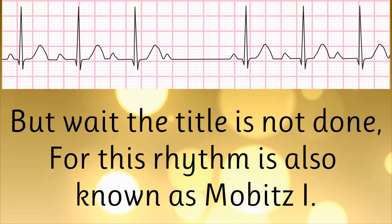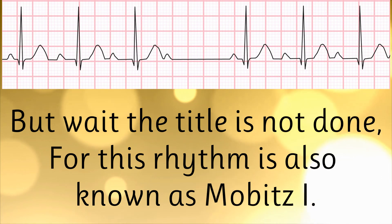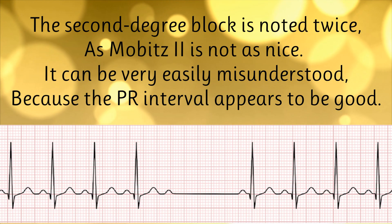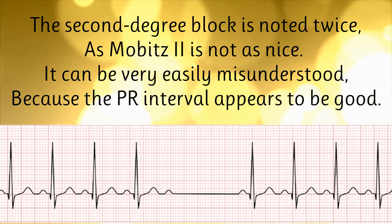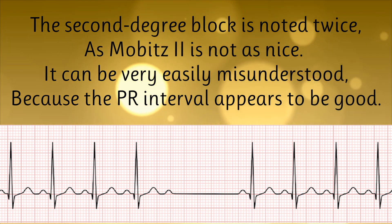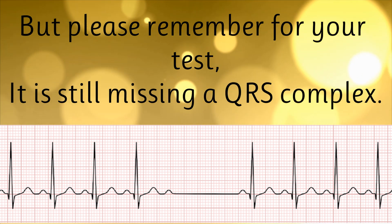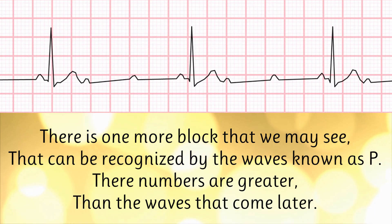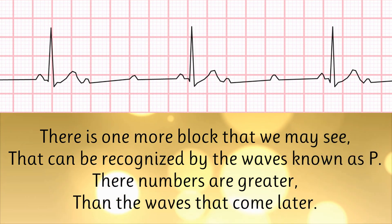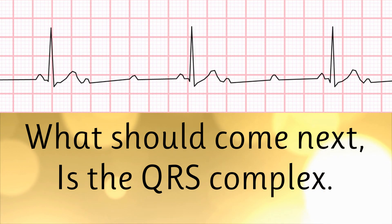But wait, this title is not done, for this rhythm is also known as Mobitz I. The second degree block is noted twice, as Mobitz II is not as nice. It can be very easily misunderstood because the PR interval appears to be good. But please remember for your test, it is still missing a QRS complex. There is one more block that we may see, recognized by the waves known as P — their numbers are greater than the waves that come later, and what should come next is the QRS complex.